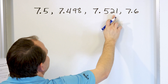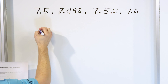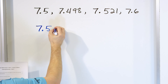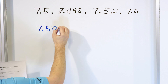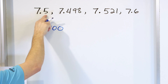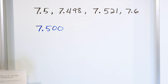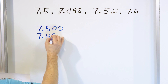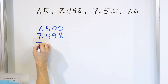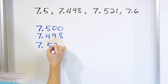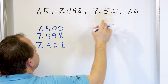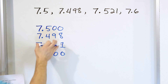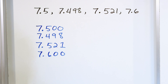Three is the largest number of decimal digits we have, so let's write them stacked up. 7.5 — we can drop zeros at the end behind a decimal, so 7.5 is the same as 7.500. Then 7.498, then 7.521, then 7.6, which becomes 7.600. Now we have numbers with the same number of digits after the decimal.